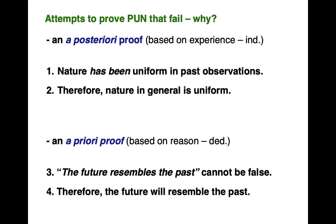Attempts to prove the principle that nature is uniform fail. This is Hume's argument. We can say two things about knowledge: knowledge can be a posteriori or a priori. A posteriori knowledge is a proof based on experience — a posteriori means after experience. Induction typically uses such proofs. Namely, nature has been uniform in past observations — predictable, behaves regularly — therefore nature in general is uniform. The sun has risen every time we've looked, so we don't think it's crazy to believe it will rise in the future.